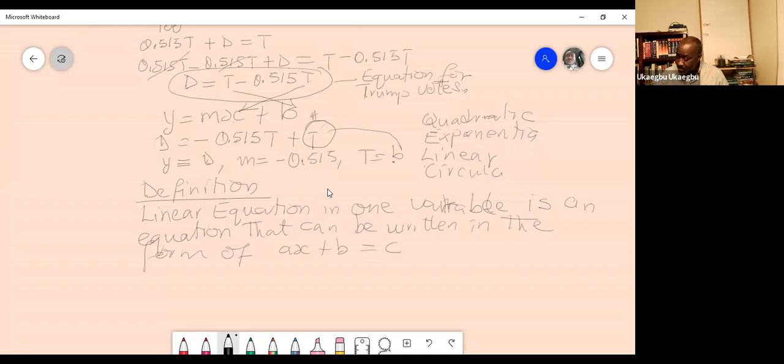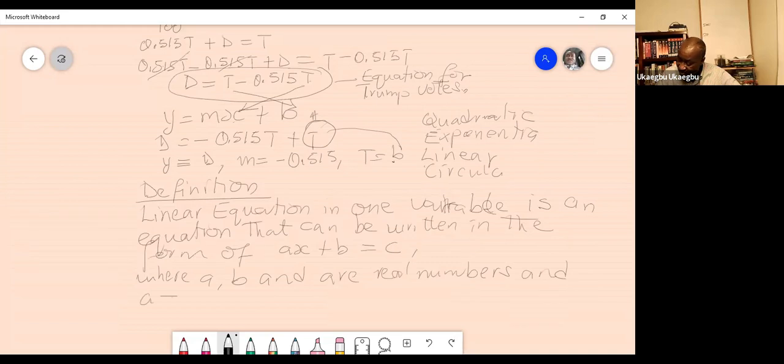So where A, B, and C are real numbers. Are what real numbers? And the value of A is not equal to zero. A is not equal to zero.